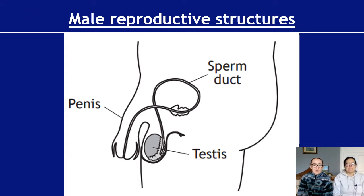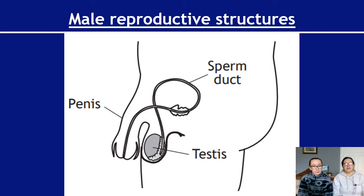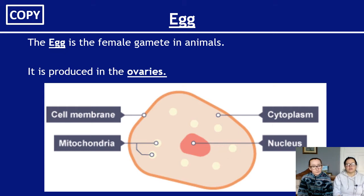For male reproductive structures, there are very few you need to know. This is from an SQA past paper — other diagrams have more detail but you don't need to know those extra parts. You need to know three things: the testes (plural of testis), which is the site of sperm production; the sperm duct, which is where sperm travel along; and the penis. Ignore anything else labeled on diagrams.